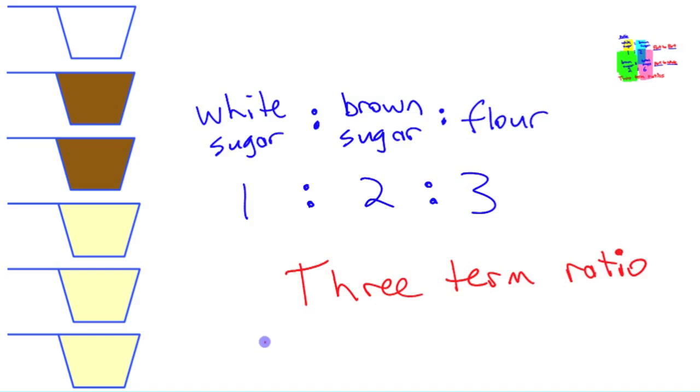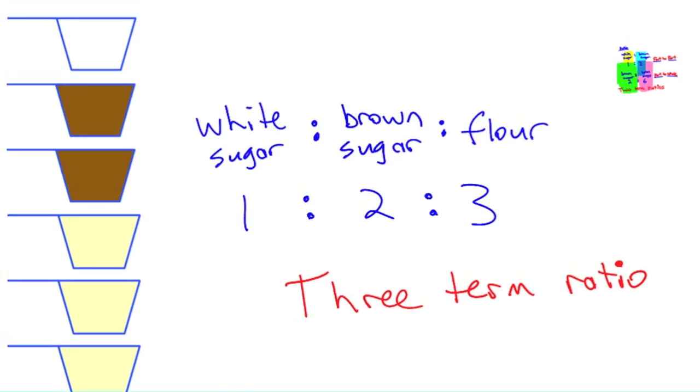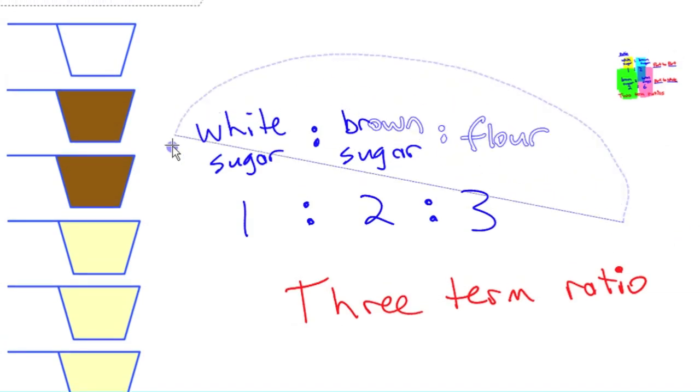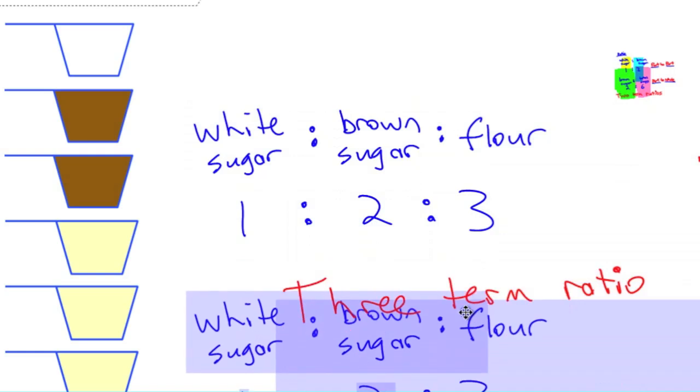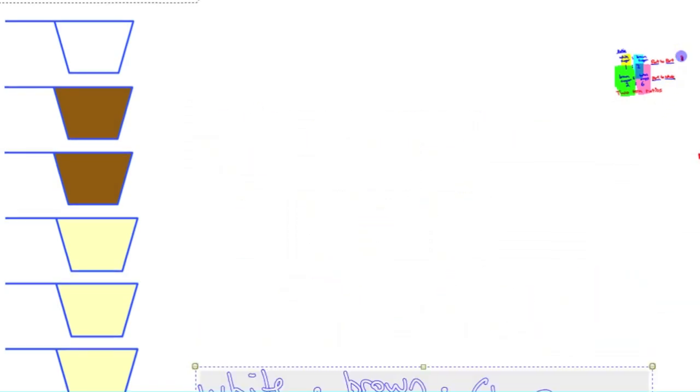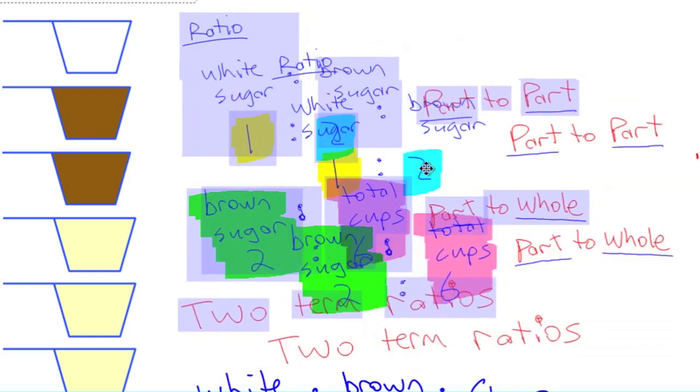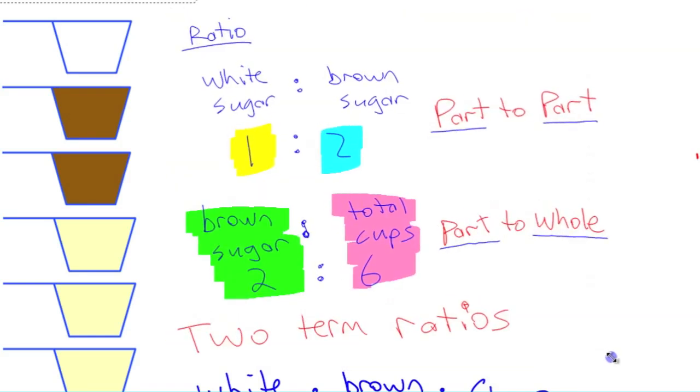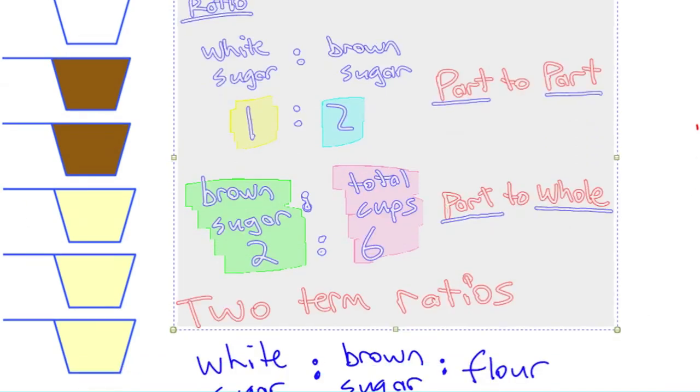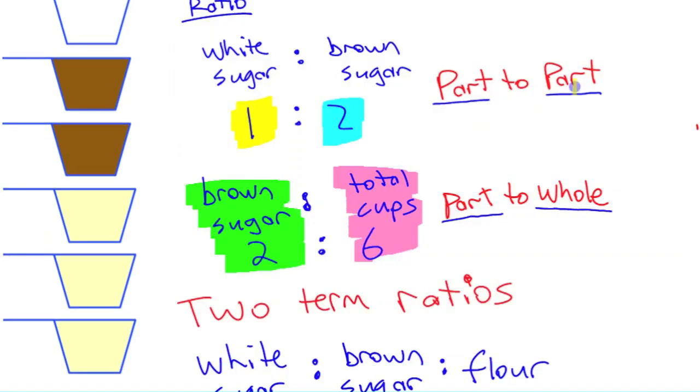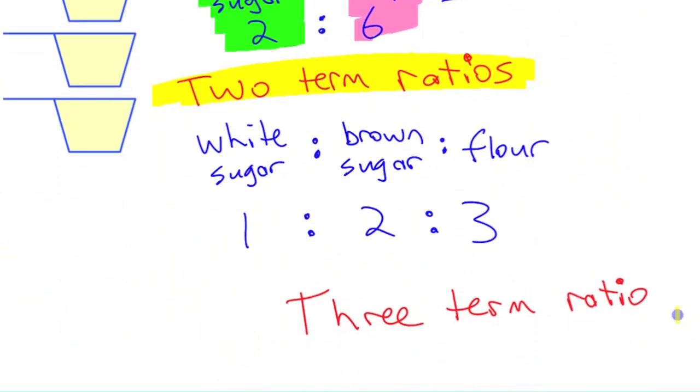A ratio is a comparison of things that have the same units. All of these things are cups. We're measuring it in cups. So they're all the same units. Important to know all those different terms. Part to part ratio, part to whole ratio, two term ratios, and three term ratios.